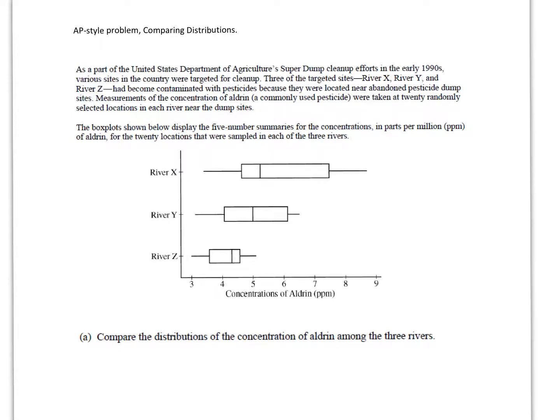And what they did is they made three different box plots. You can see we've got our three graphs down here, river X, river Y, and river Z, and the concentrations of aldrin in parts per million, that's what PPM stands for. Down here on the x-axis everything clearly labeled so I can show the similarities and differences between them.